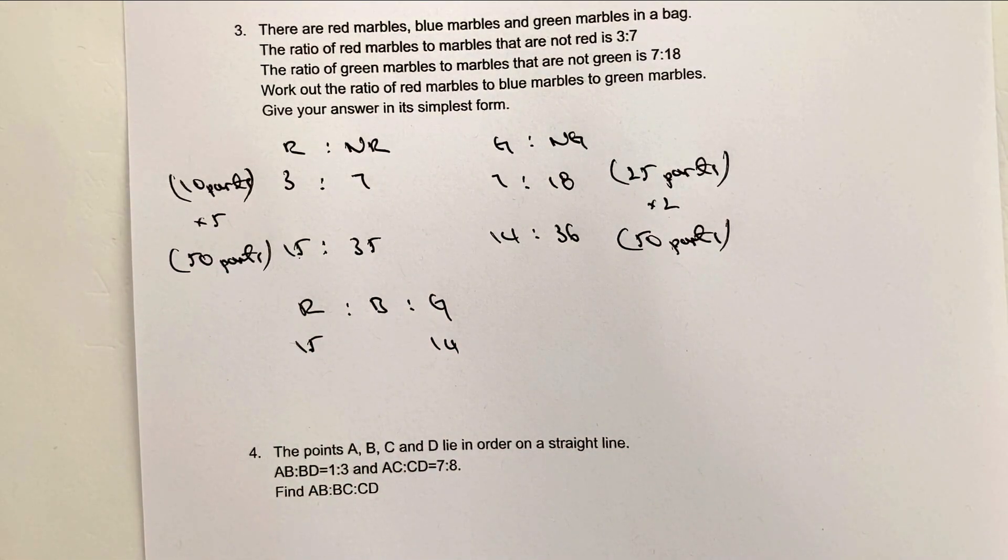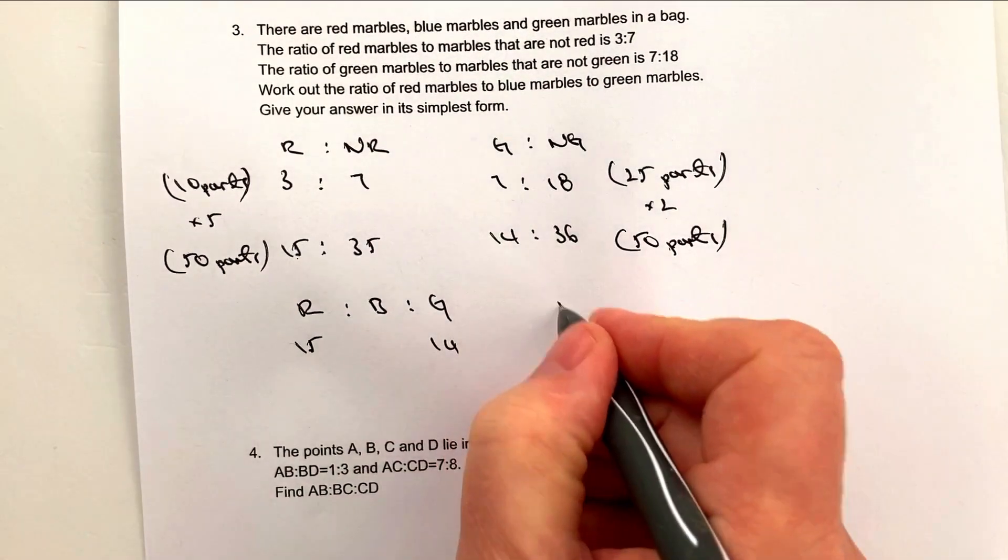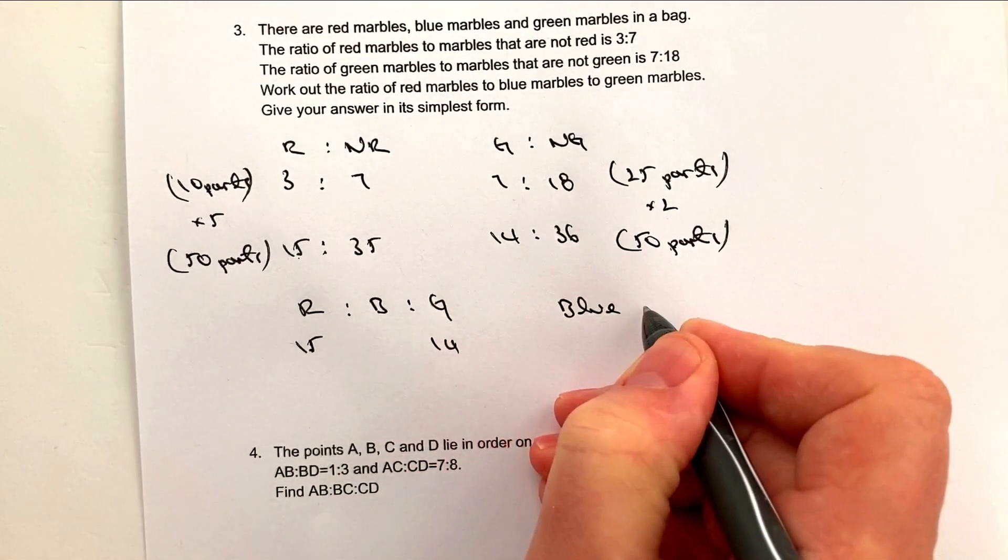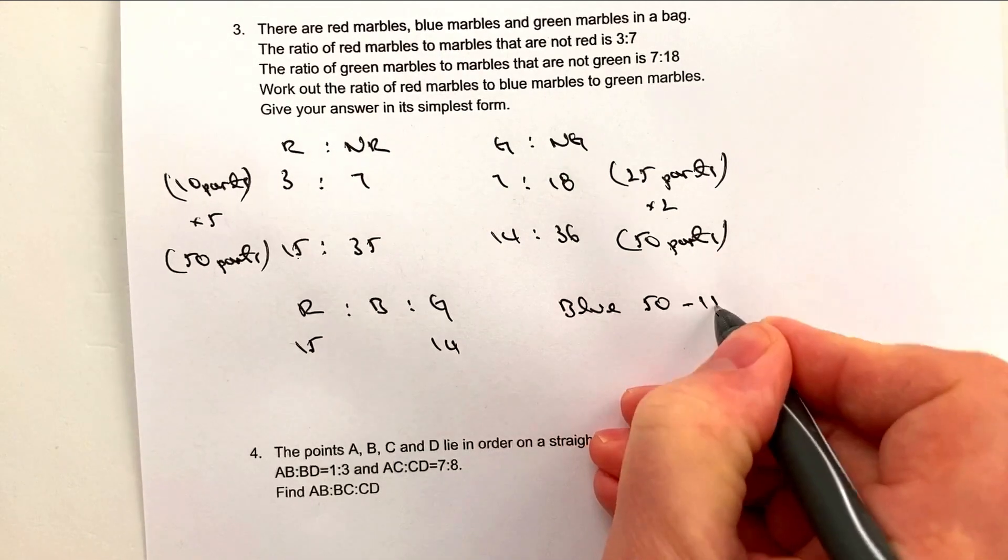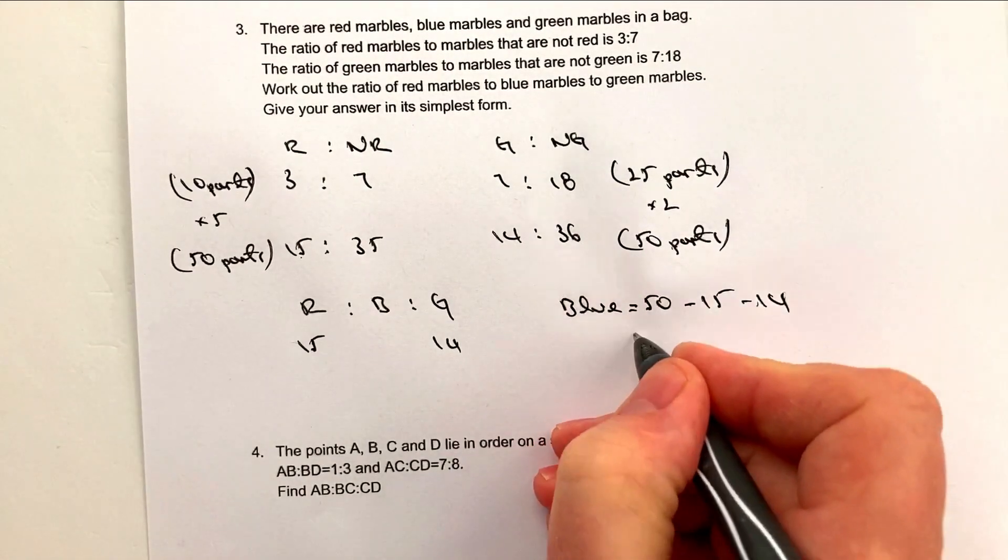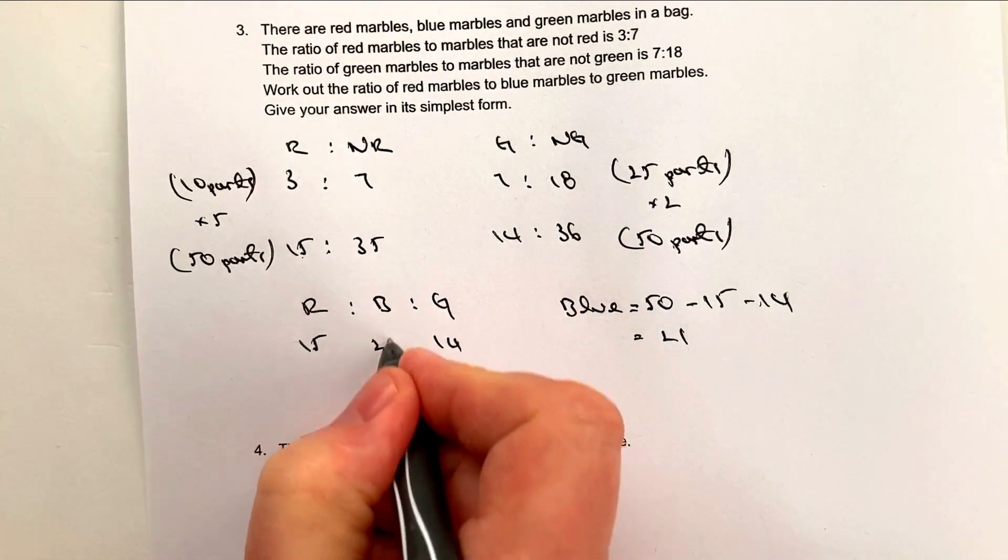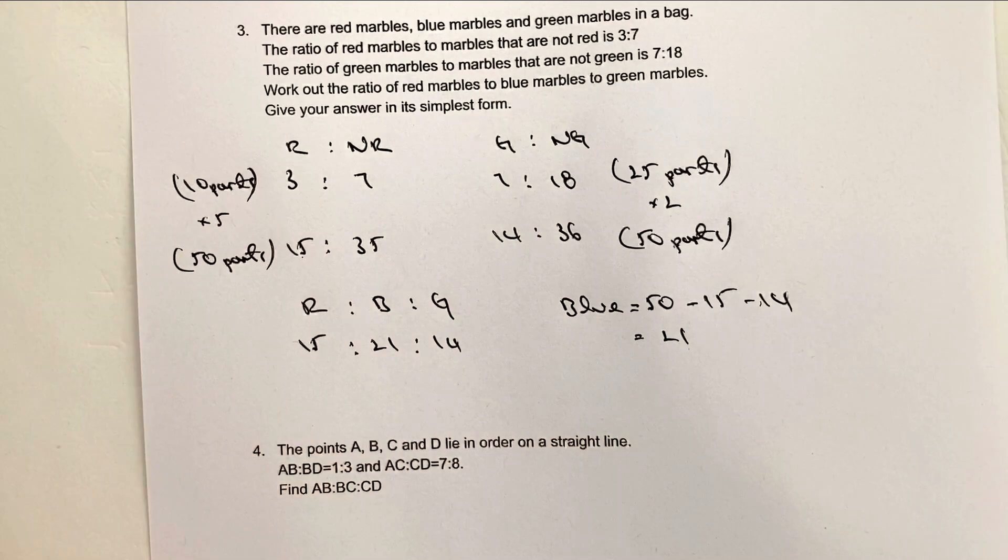So at the moment we know that red is going to be 15 and we know that green is going to be 14. So 15 and 14. So it remains then that we need to figure out the value of the blue marbles. Well the blue, bear in mind we've got 50 parts all together. Blue is then going to be 50 take away 15 take away 14, and when we work all of that out we should get 21.